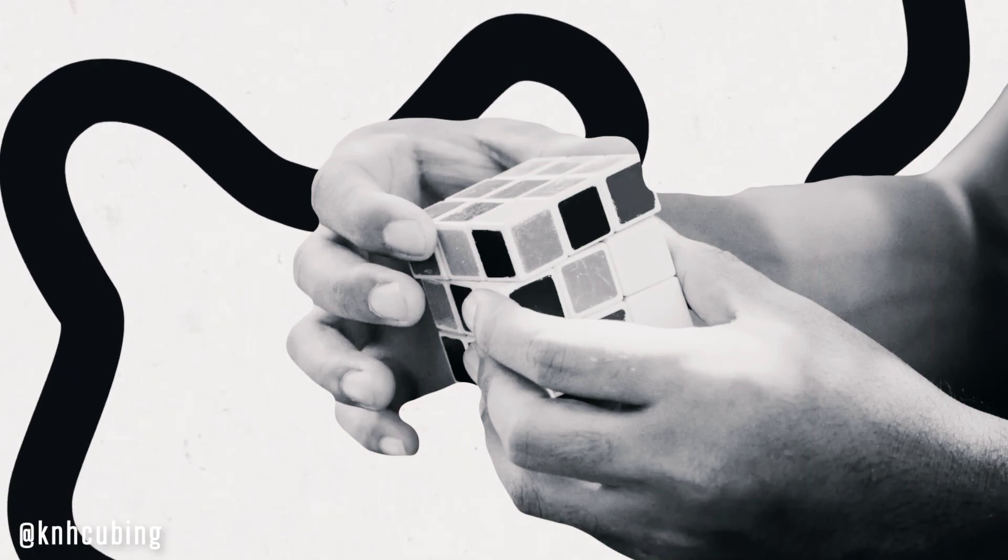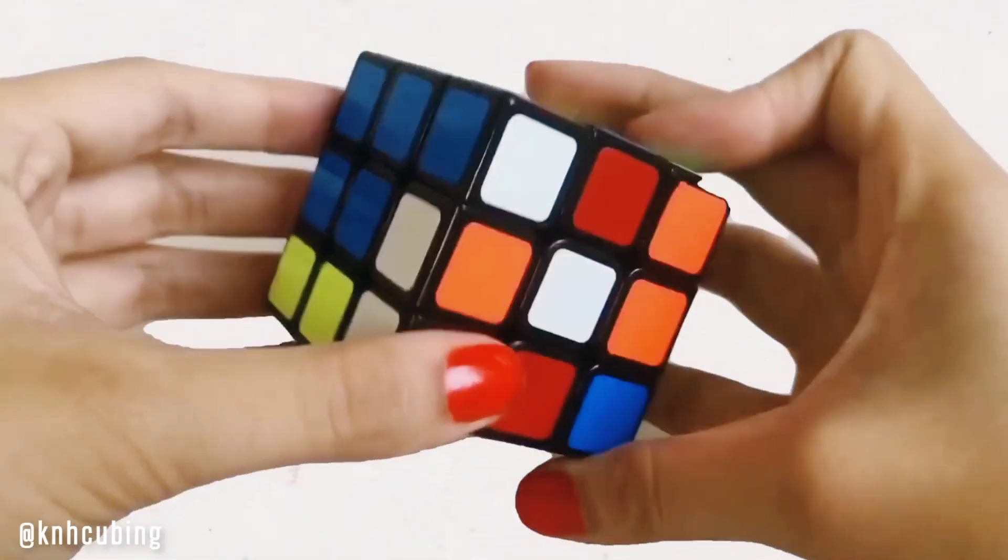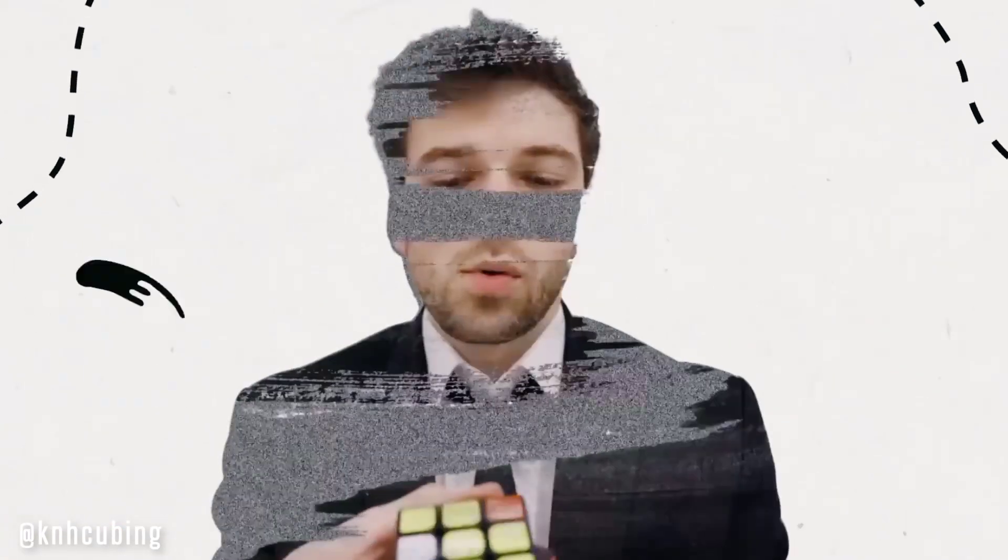But then, he wanted it back in order with each side being one color. But bringing it back turned out to be a real catch. That's when Mr. Rubik realized he had just invented a puzzle.